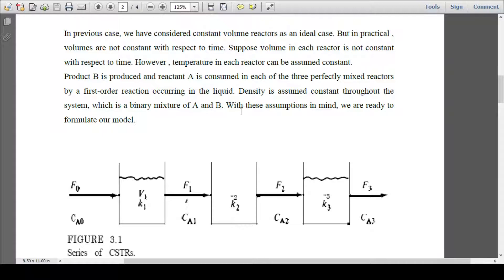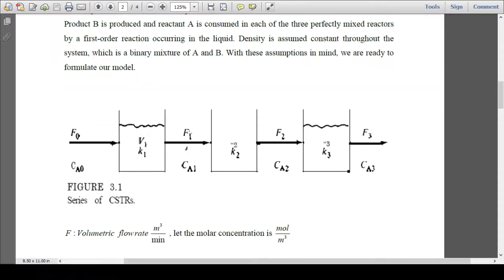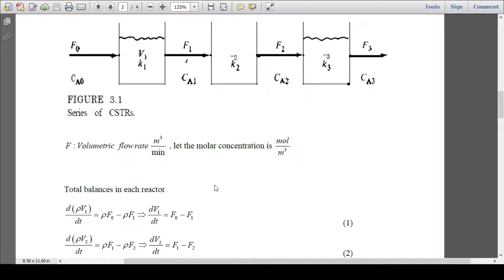In order to develop the equations, temperature in each reactor is assumed to be constant. Each reactor has its own constant temperature. F is volumetric flow rate in cubic meters per minute, and C is molar concentration in moles per cubic meter.